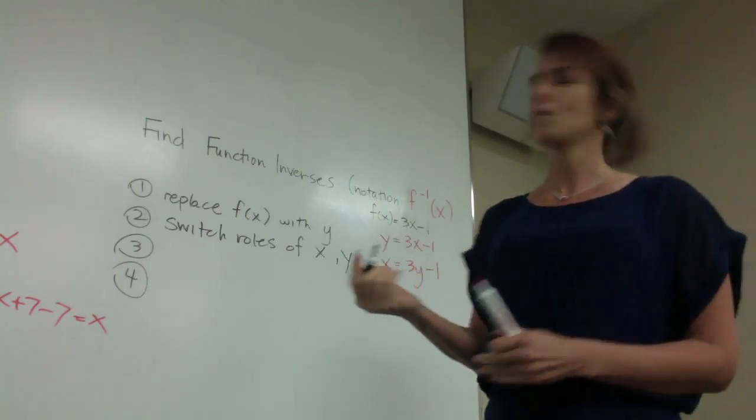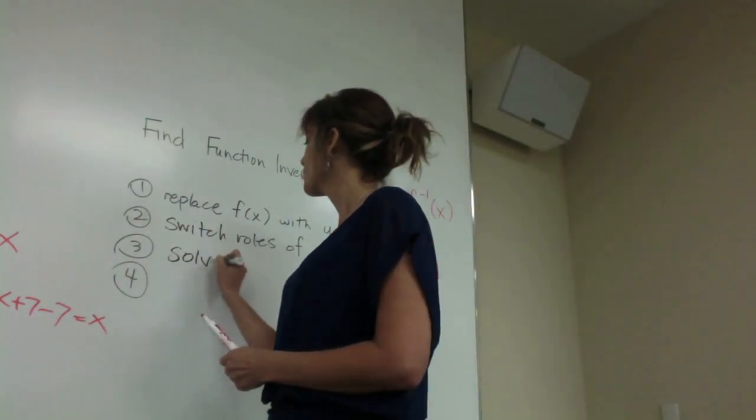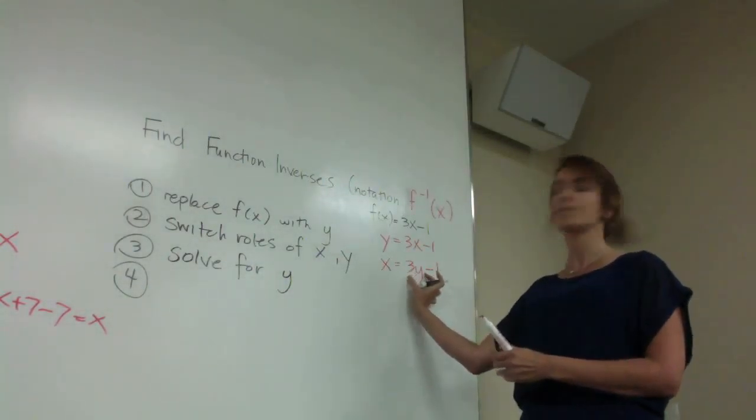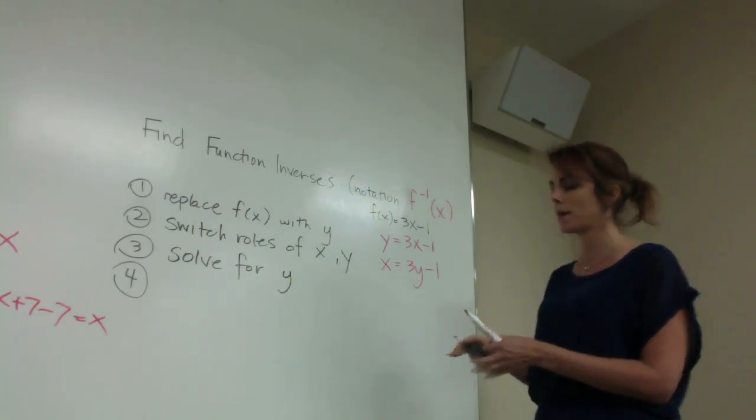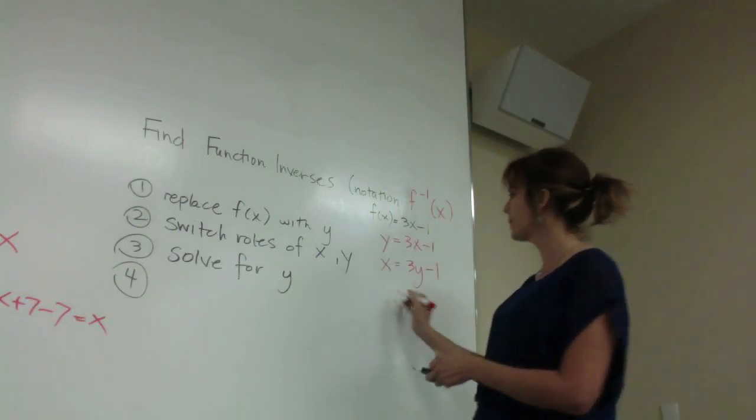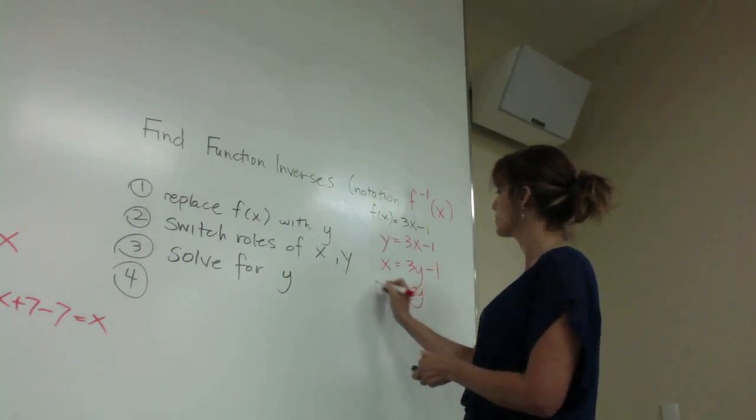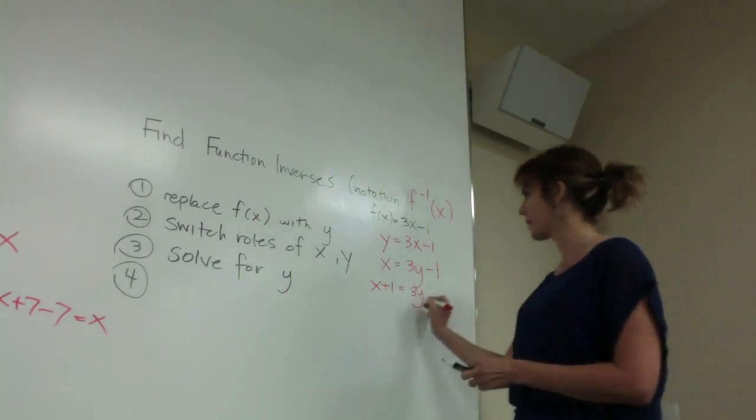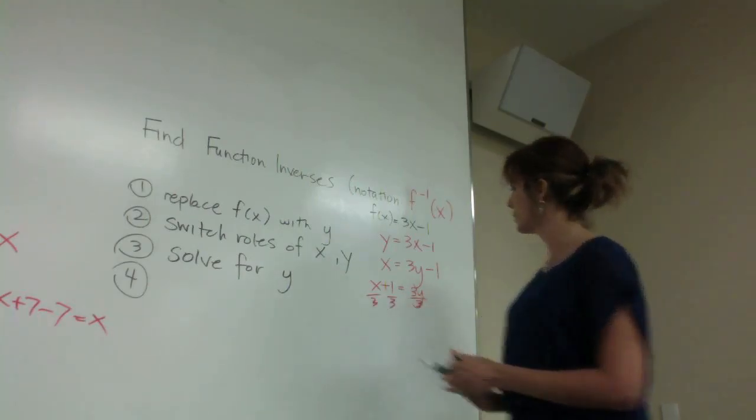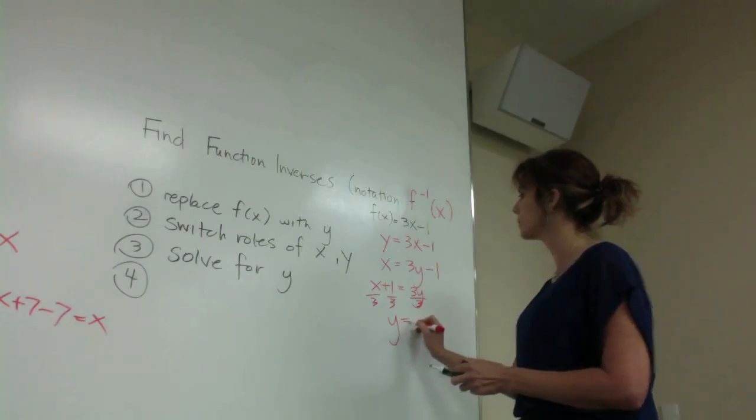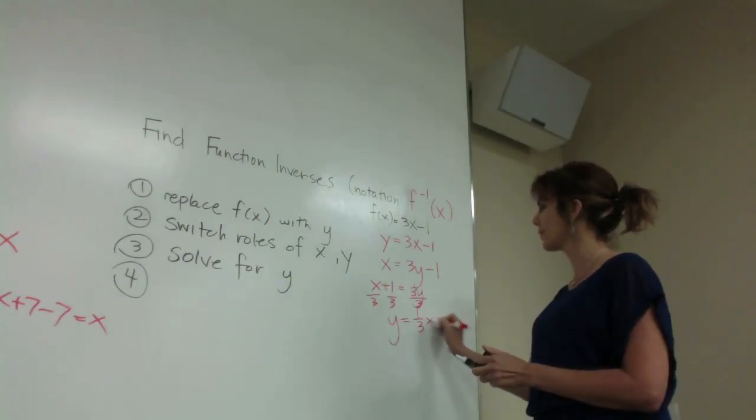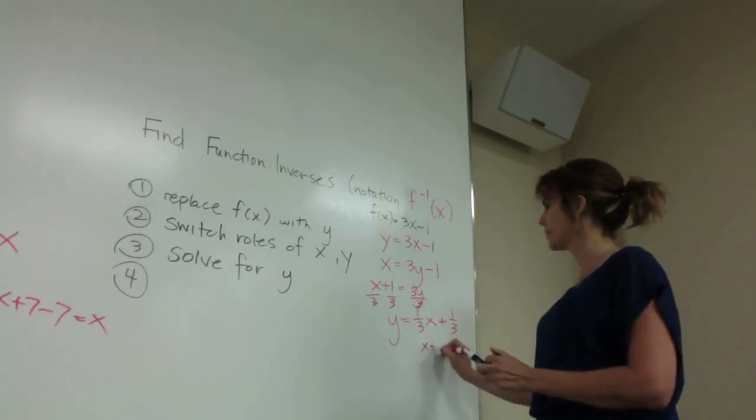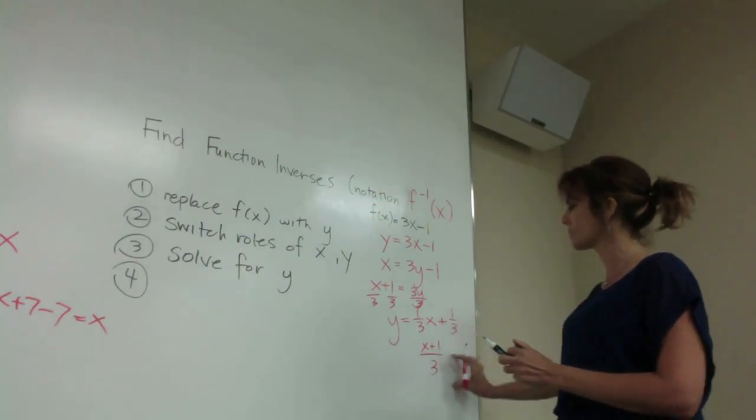The next thing we're going to do is solve for y. We're going to take this and isolate first the term where you see y and then the y itself. So let's get rid of this -1 by adding it, and we would have 3y = x+1. Then we would get rid of this 3 by dividing it out on both sides, and we would have y = x/3, otherwise known as (1/3)x + 1/3. This whole thing could also be written as (x+1)/3. These two expressions are equivalent.